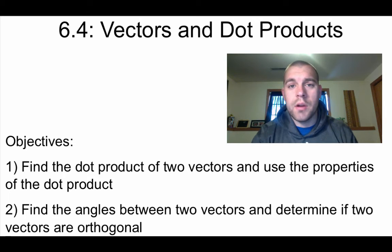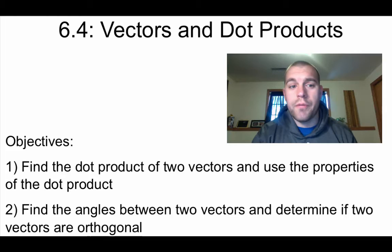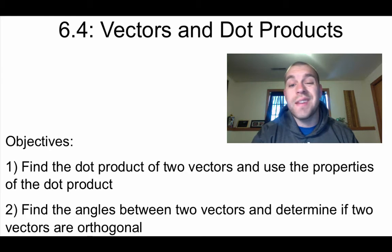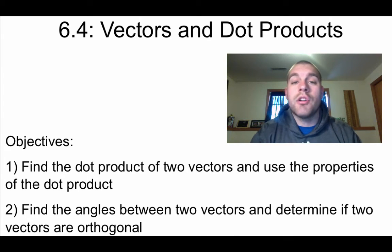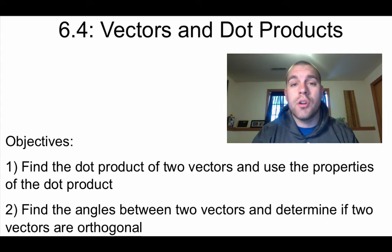Hey guys, Mr. Bakker here. This is lesson 6.4. We've got two objectives: we're going to find the dot product of two vectors and use some different properties of the dot product, and we're going to find the angle between two vectors and determine if those two vectors are orthogonal.